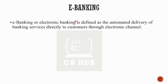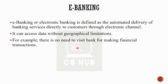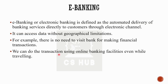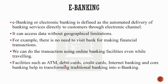Next is e-banking, or electronic banking. It is the automated delivery of banking services directly to customers. All banks can have online versions — for example, the online portal of SBI. Online banking facilities include ATM, debit card, credit card, internet banking, and core banking, all helping to transform traditional banking into e-banking.